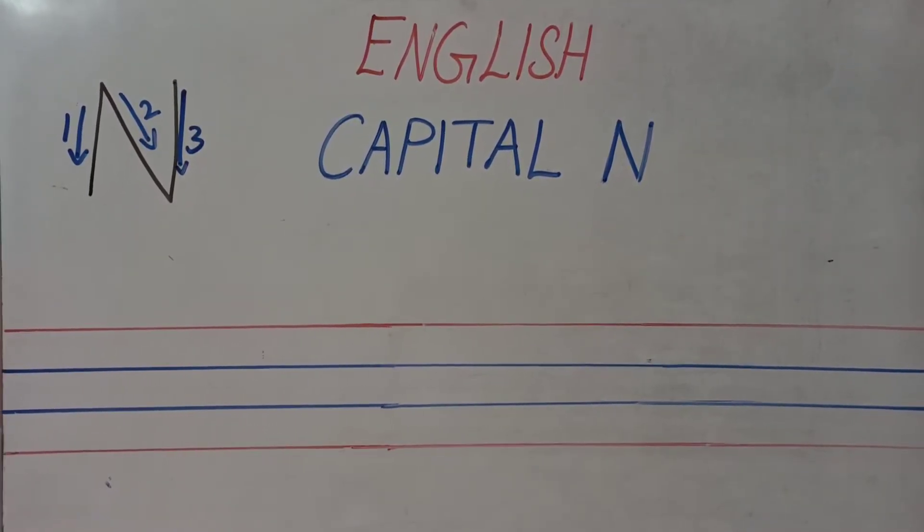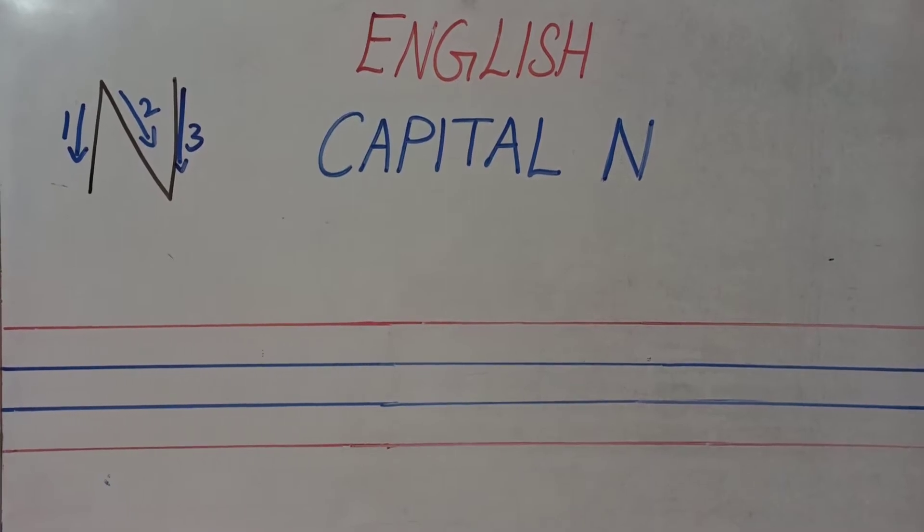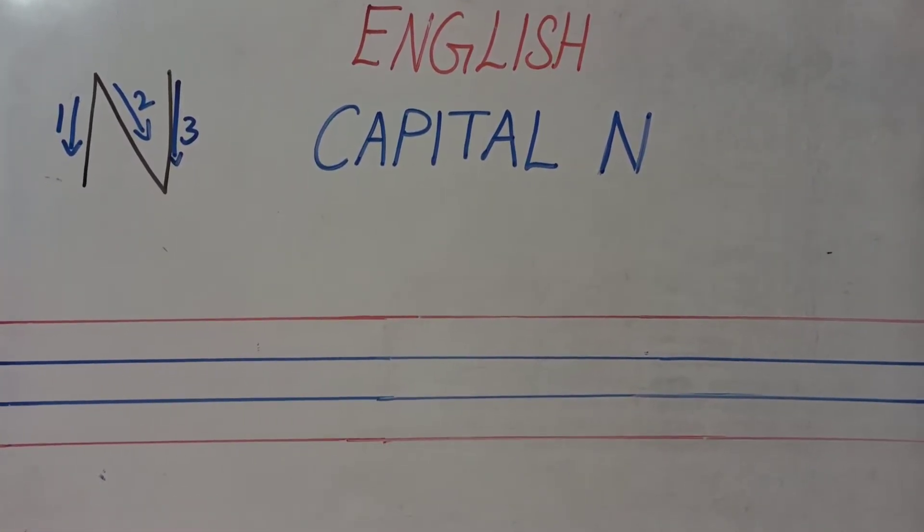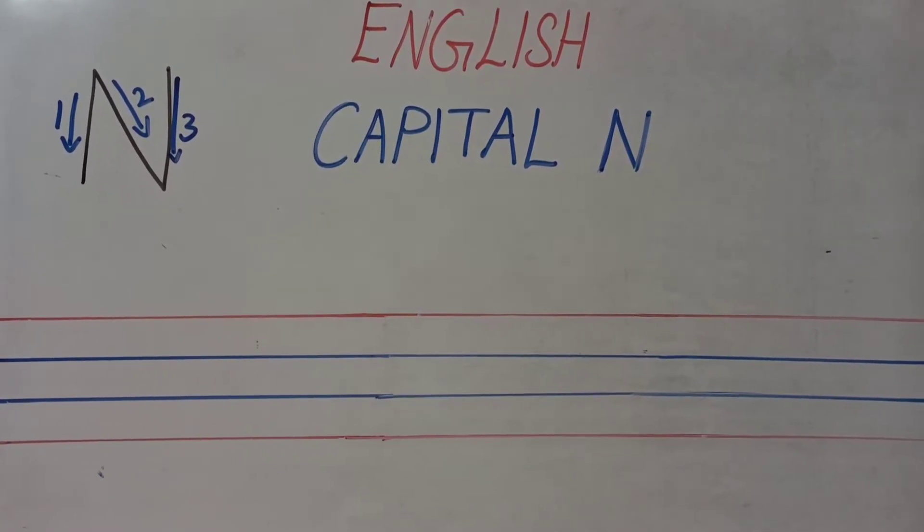Now let's see how to write in our 4 lines notebook. So what you should say children? Always yes. Red line, blue line, blue line. Stop.